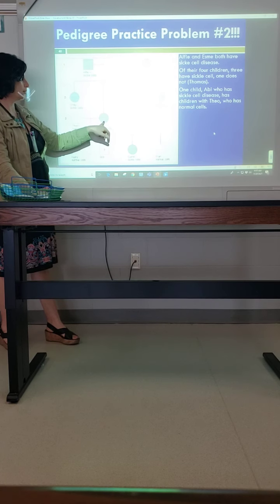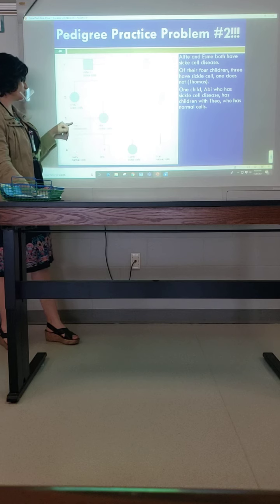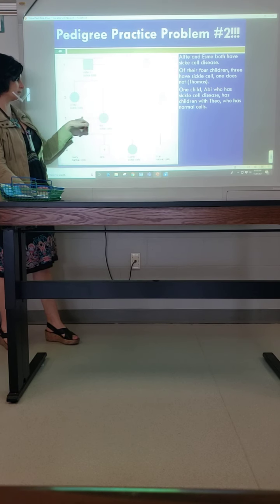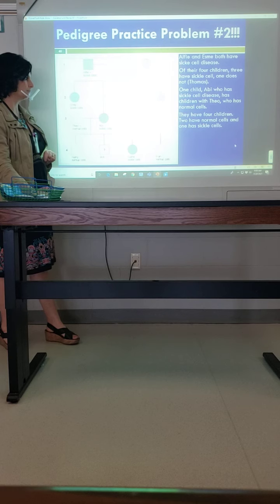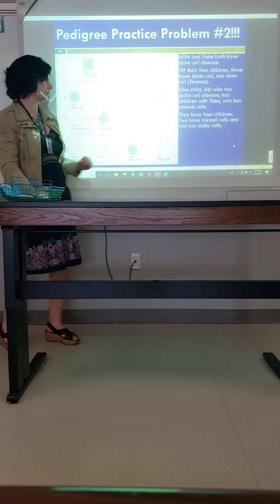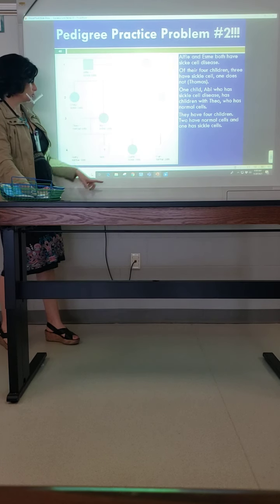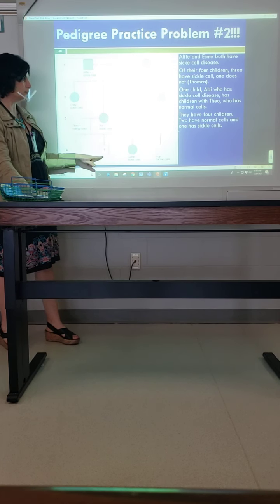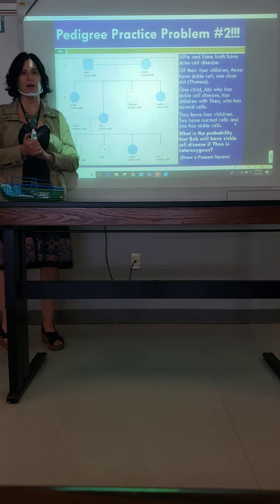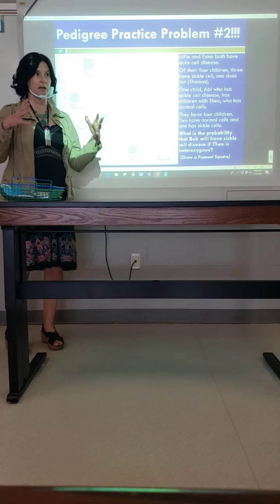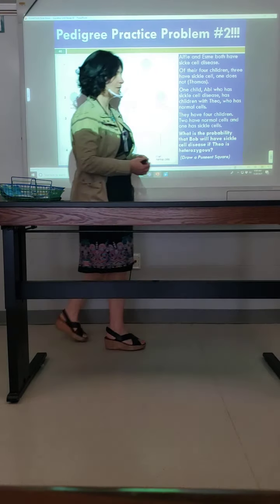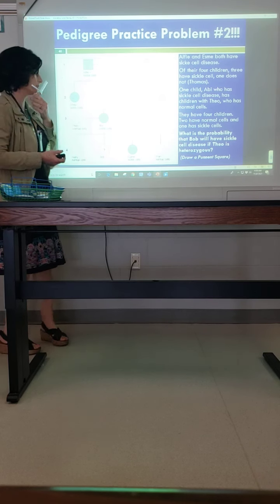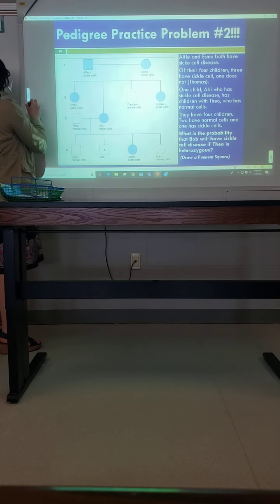One child, Abby, has sickle cell and has children with Theo, who has normal cells. They end up with four children. Two have normal cells and one has sickle cell. We want to determine the probability that Bob will have the sickle cell trait. We can make a Punnett square — that's what we learned Punnett squares for, to make probability predictions. This would be a real-life situation where it could be used.